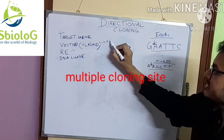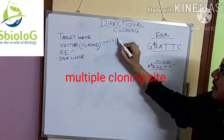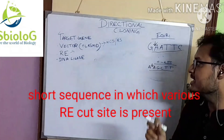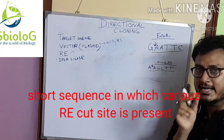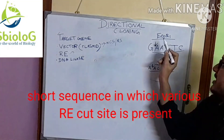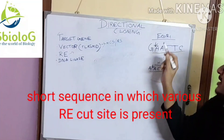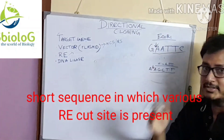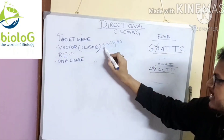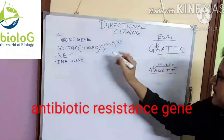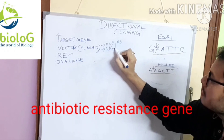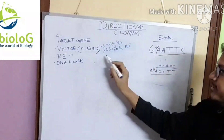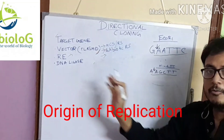This plasmid has three unique properties. One is that it must contain a multiple cloning site, that is a restriction site — a short stretch of sequence in which various restriction enzyme sites are present, where various restriction enzymes cut the vector. The second one is it must contain an antibiotic resistance gene, and the third one is it must contain an origin of replication.